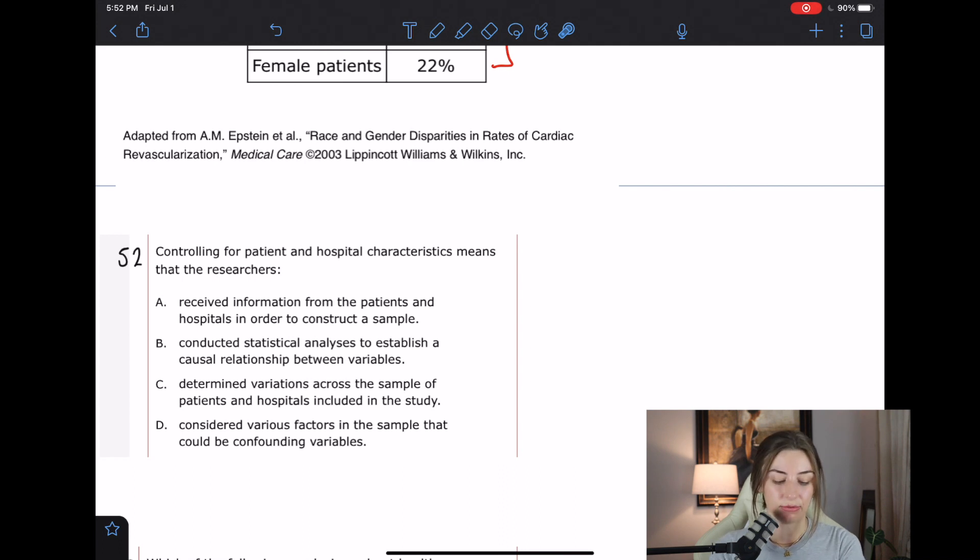A: received information from the patients in hospitals in order to construct a sample - that's not controlling for things. B: conducted statistical analyses to establish a causal relationship between variables. No, most of the time, like controlling for something is like a statistical thing that you do in your software, but it doesn't establish a causal relationship. So no, that's not the right answer.